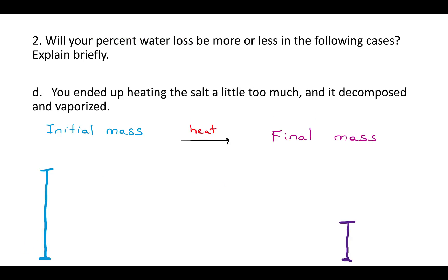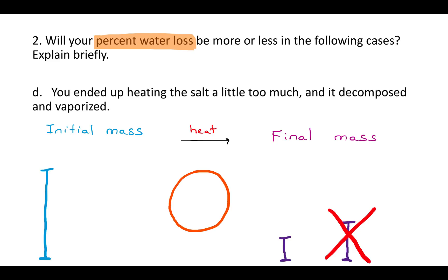For scenario D, it says you ended up heating the salt a little too much and it decomposed and vaporized. That is not affecting the initial mass — that's affecting the final mass. Not just the water is evaporating, but also some of the salt, so the final mass is really going to be smaller than it otherwise would have been. What is that going to do to the difference between the initial and final mass, which is what we interpret as the percent water loss?